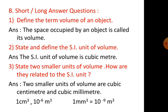How they are related? One cubic centimeter is equal to 10 to the power minus 6 cubic meter and one cubic millimeter is equal to 10 to the power minus 9 meter cube.